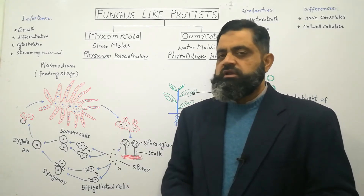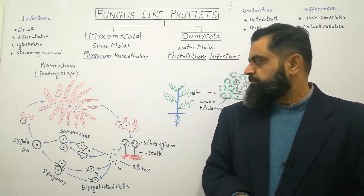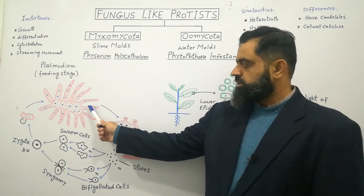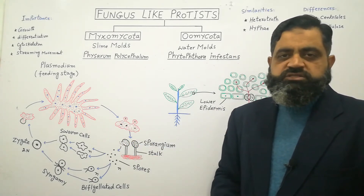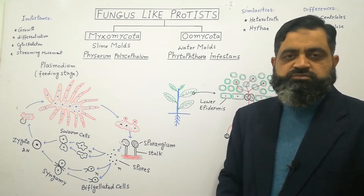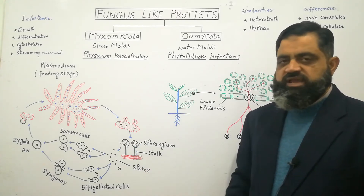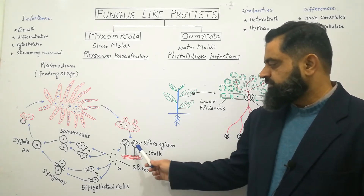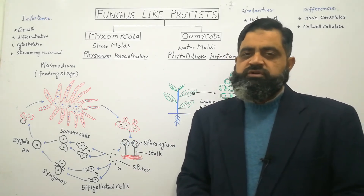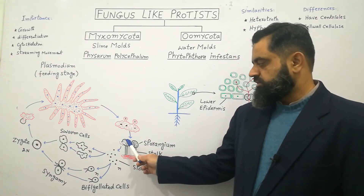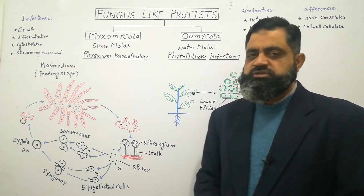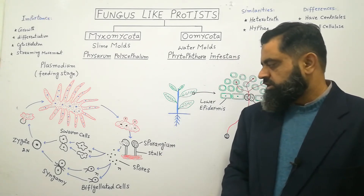During favorable conditions, it can increase its cytoplasm very fast. But during unfavorable conditions, it starts to produce spores and its mass develops a stalk-like structure known as sporangia. This stalk-like structure contains a sac-like structure called a sporangium, where during meiosis many haploid spores are produced. The sporangium then breaks up and spores are released, dispersed by wind to different places on land.